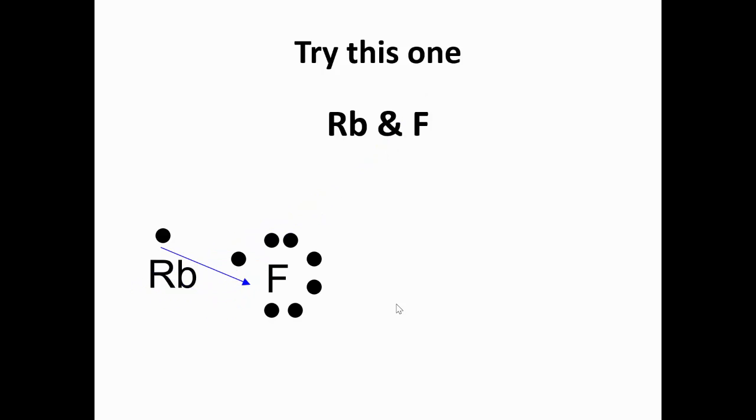Okay, if you thought that electron would move over and rubidium would become positive, you are right. And fluorine would become negative and they'd have an ionic bond.